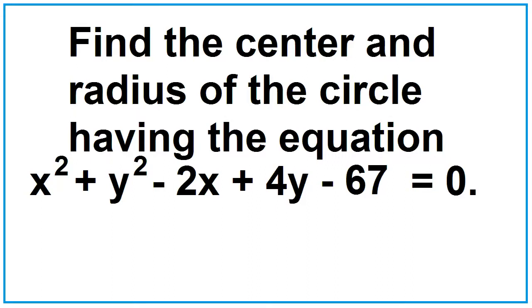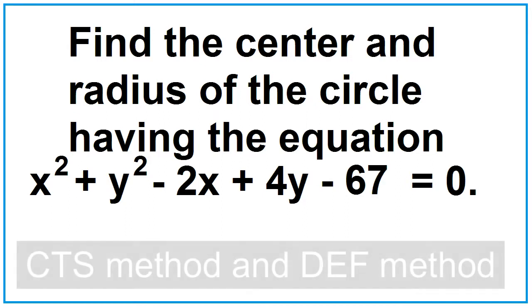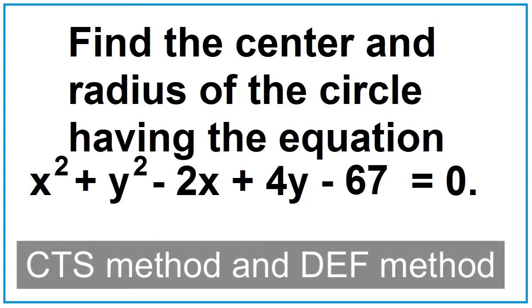Find the center and radius of the circle having the equation x squared plus y squared minus 2x plus 4y minus 67 equals 0. Let's answer this in two ways: one is the CTS method, completing the square, and the other one is the DEF method.